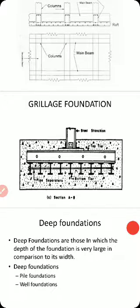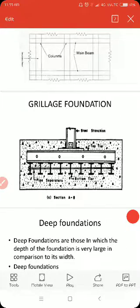Grillage foundation is provided for machine foundations. For example, in a lab there are many machines which cause vibration, which is dangerous to the structure. To counteract the effect of vibration, we use grillage foundation. In grillage foundation, we use steel embedded in concrete.